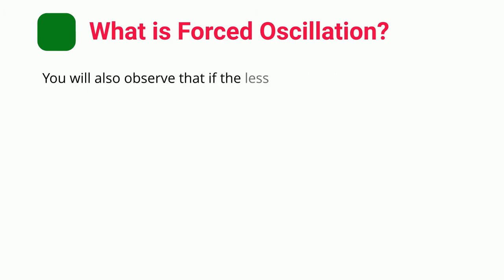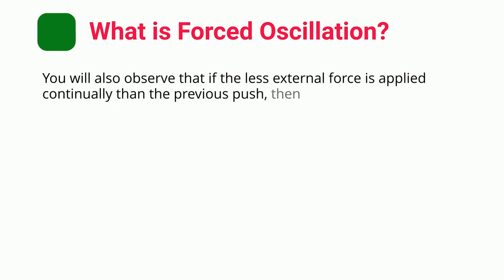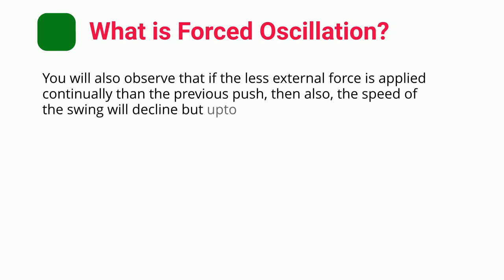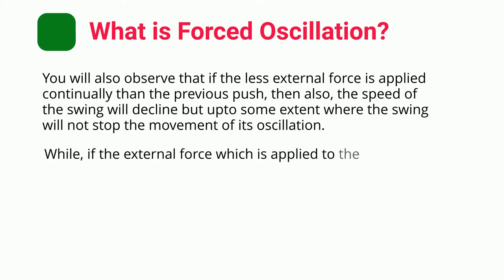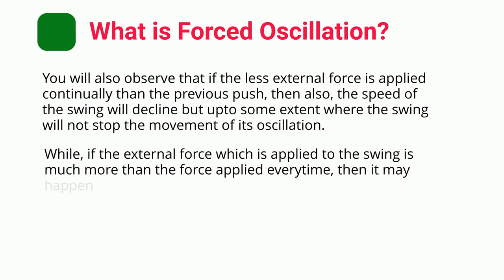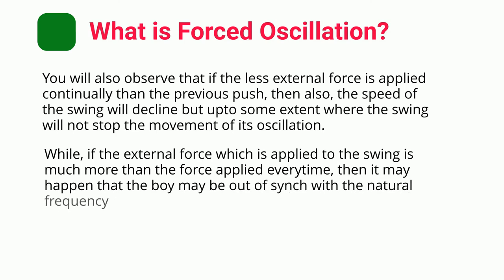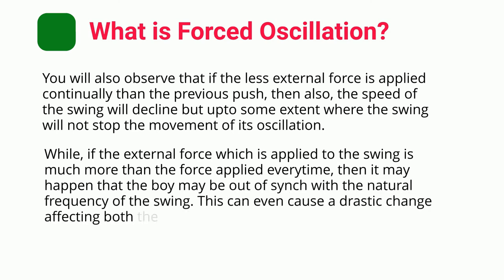You will also observe that if less external force is applied continually than the previous push, then the speed of the swing will decline but only up to some extent where the swing will not stop its oscillation. While, if the external force applied to the swing is much more than the force applied every time, it may happen that the boy may be out of sync with the natural frequency of the swing. This can even cause a drastic change affecting both the boy and the swing to collapse.